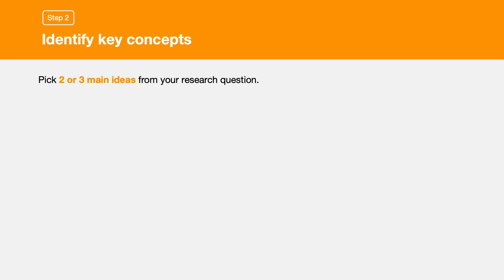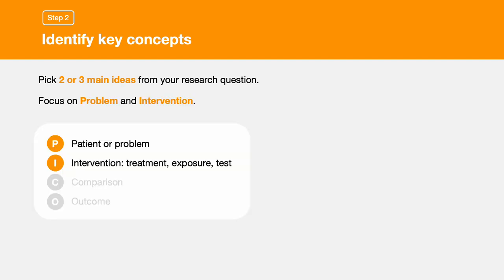Step two: identify key concepts. Pick two or three main ideas from your research question. Fewer concepts help you cast a wider net, leading to a more complete search. Focus on the problem and intervention, as these concepts are often emphasized in abstracts and use standardized terms, making them ideal search terms. In our example, we'll focus on heart attack and aspirin as our key search concepts.